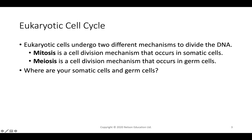Meiosis, in contrast, is a specialty type of division that occurs only in germ cells — sperm and egg. In meiosis, we have one replication event and two division events, which means we go from diploid, or two copies of every chromosome, to haploid, meaning one copy of every chromosome. Germ cells are sperm and egg, found particularly in your gonads. Somatic cells are every other cell in your body.